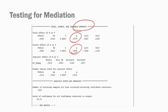The next step is to look at the indirect effect. We look at the bootstrapping confidence interval. We see that zero is not in the 95% confidence interval, which indicates to us that this indirect effect is significant. So we now have evidence for the indirect effect — meaningfulness influences performance via engagement.